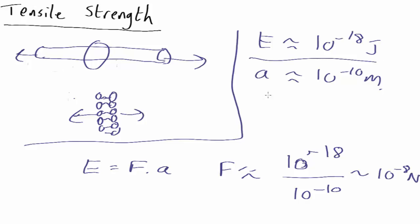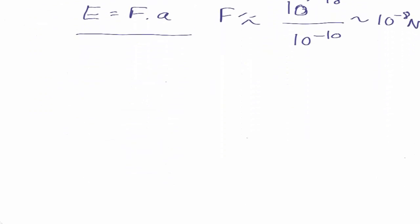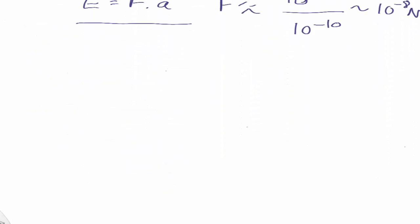So we've got a characteristic energy, a characteristic length. Divide one by the other and that will give us a characteristic force. Another way to think of it is that force can be defined as the gradient of an energy curve. So if you remember,